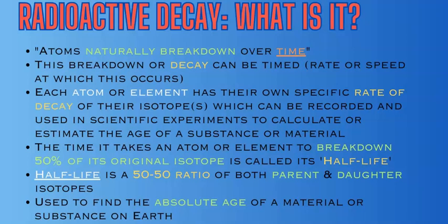This change is consistent based on the element and what's breaking down in the isotope. What scientists are looking for in dating the material is the half-life: the time it takes a certain element or atom to create a 50-50 ratio between the original isotope and the daughter isotopes that have been created. This is used to find the absolute age of a material — the exact number of years, which could be thousands up to billions of years.